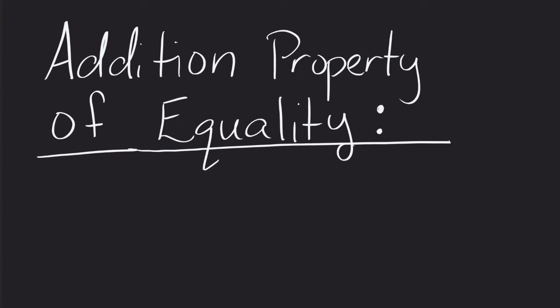The addition property of equality. The addition property basically says that if we have a value A equaling B, that we could then take some other value, let's call that C.